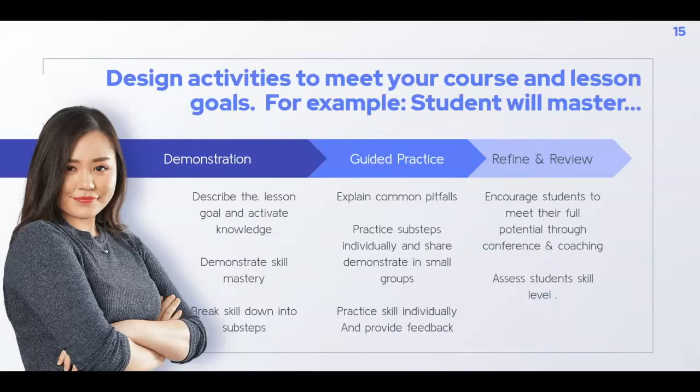For example, if you want a student to master a skill, the first thing you might do is put on a demonstration of that skill. You would explain to the student the goal of the lesson and introduce the skill. You would activate prior knowledge, which may come from their experience or from some materials that you had provided.